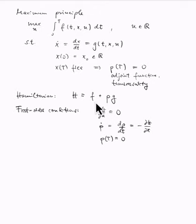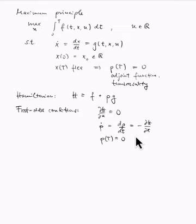Regarding sufficient conditions: if the Hamiltonian is concave in x and u, then a pair x and u satisfying the first-order conditions is already optimal. There are generalizations of that, but in all our examples the Hamiltonian will be concave in this sense, so we don't need to worry further about sufficiency.